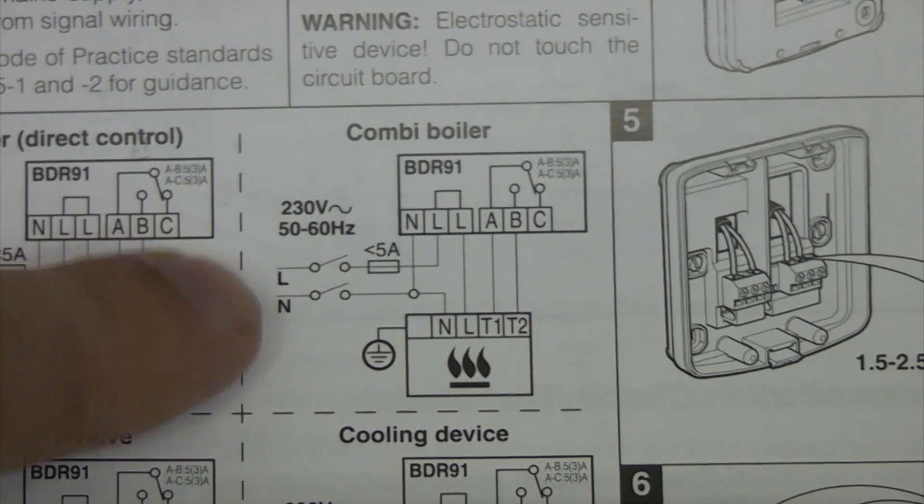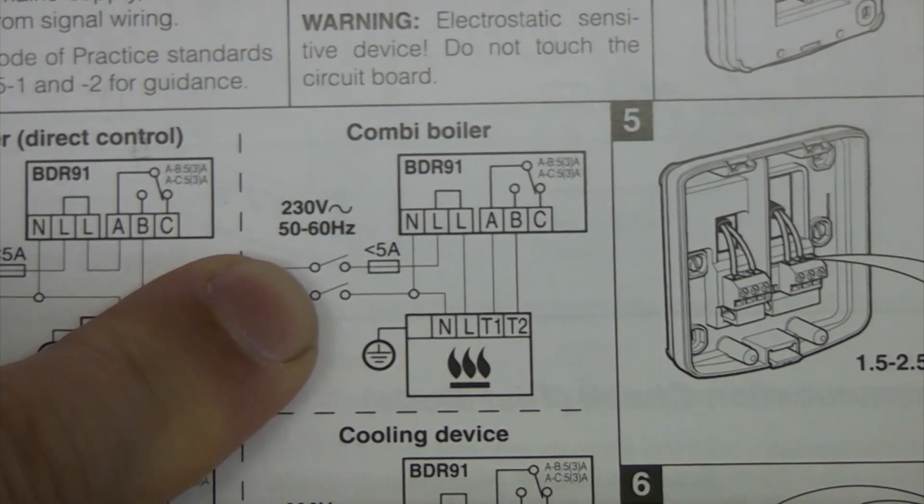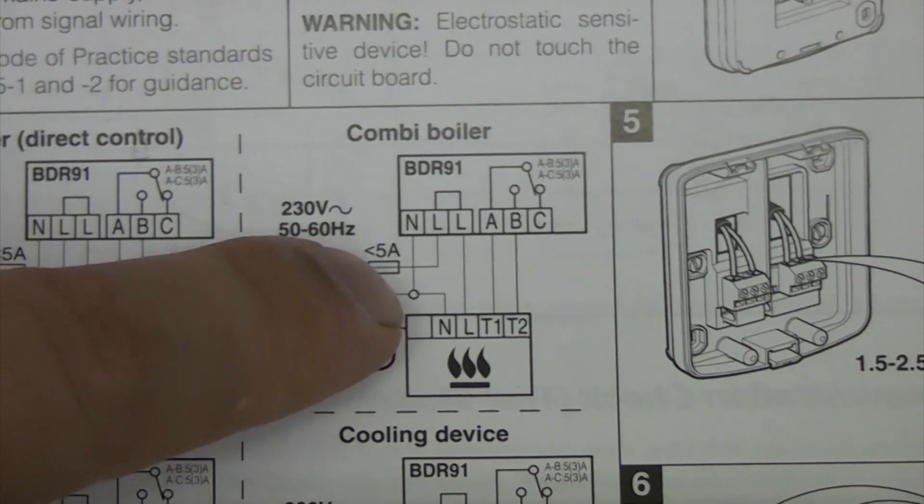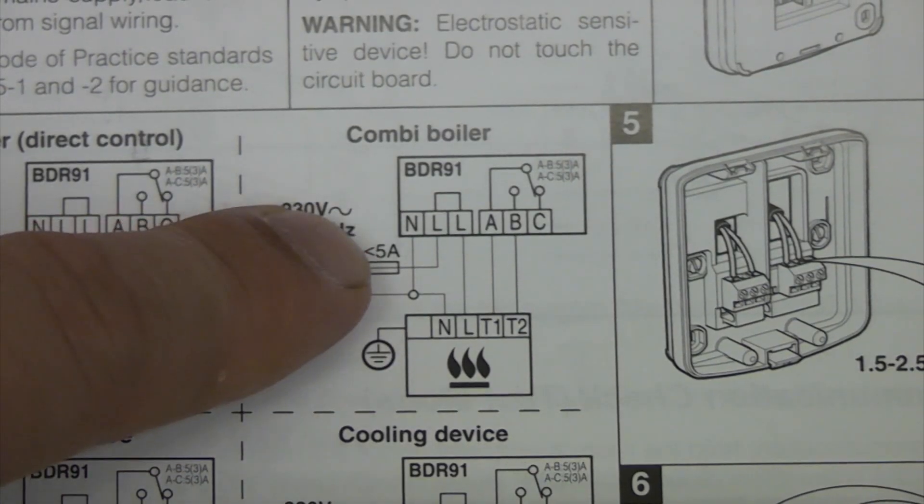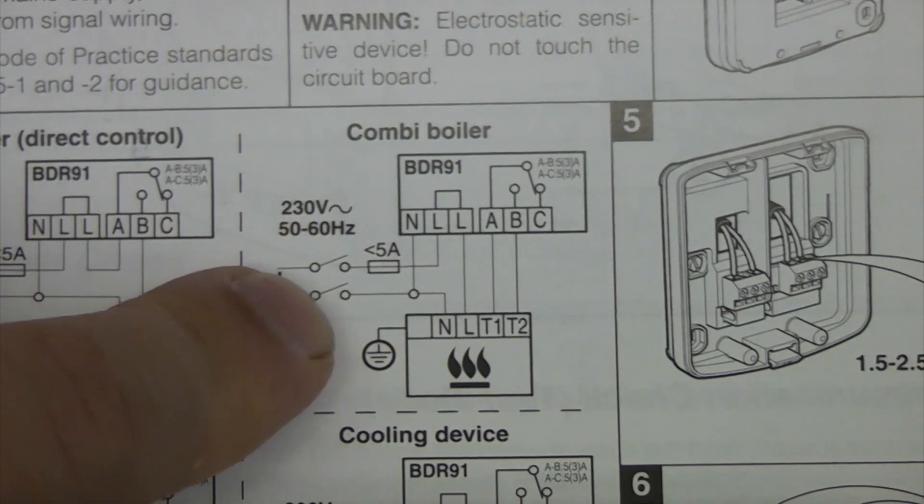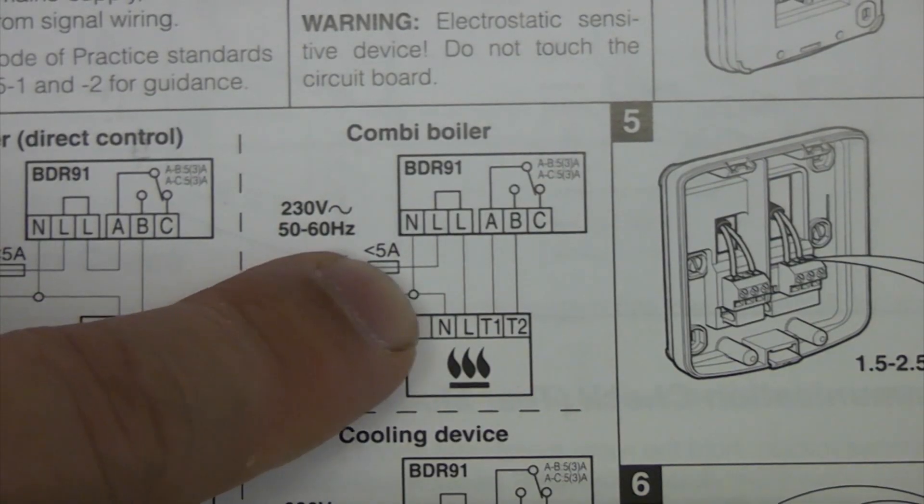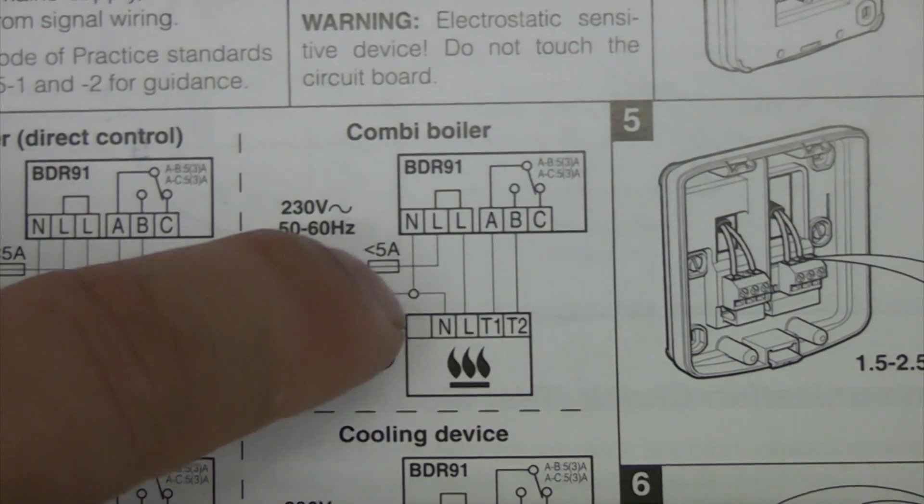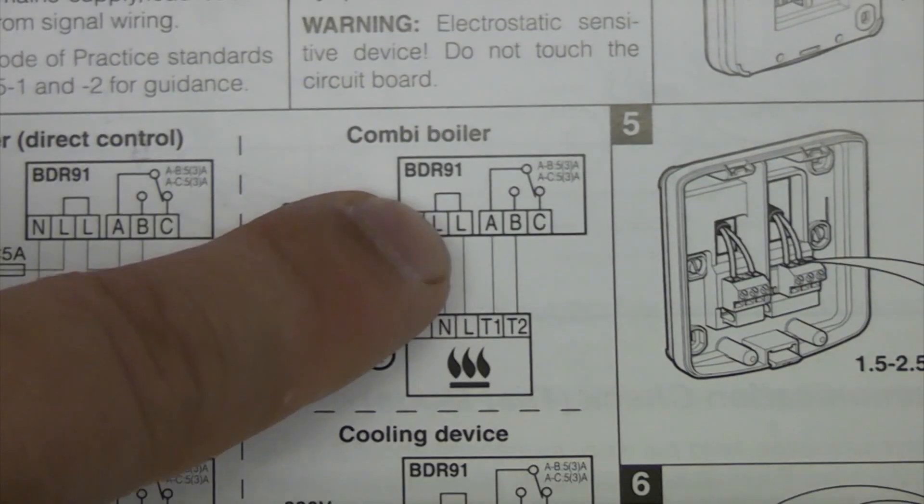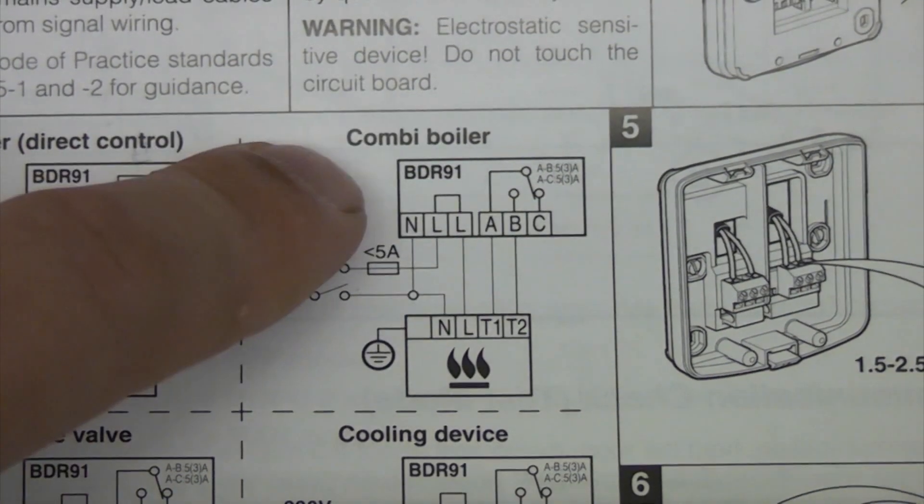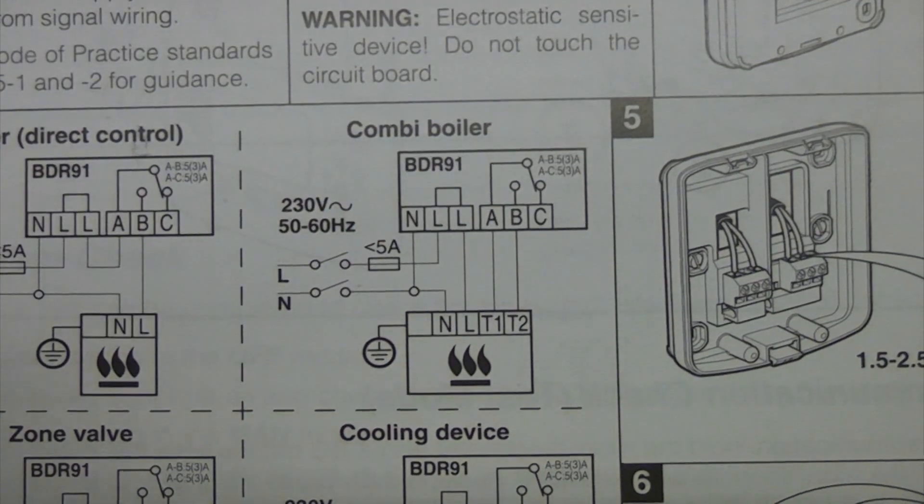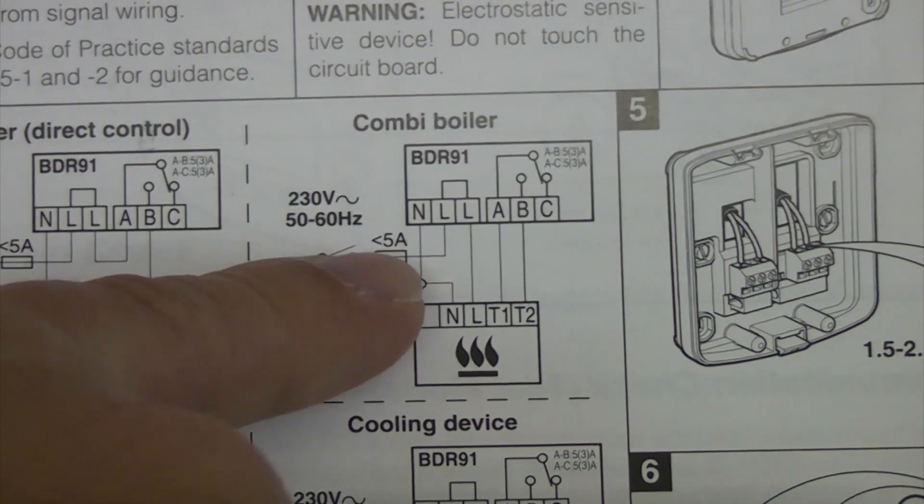So we need a live and a neutral which goes through a double pole switch and then a fuse that is smaller than 5 amps, and then all we need to do is take a connection to the neutral and a connection to the live. And what we are going to do is we are just going to piggyback those connections from the connections that are already on the boiler because they already go through a double pole switch and the fuse.